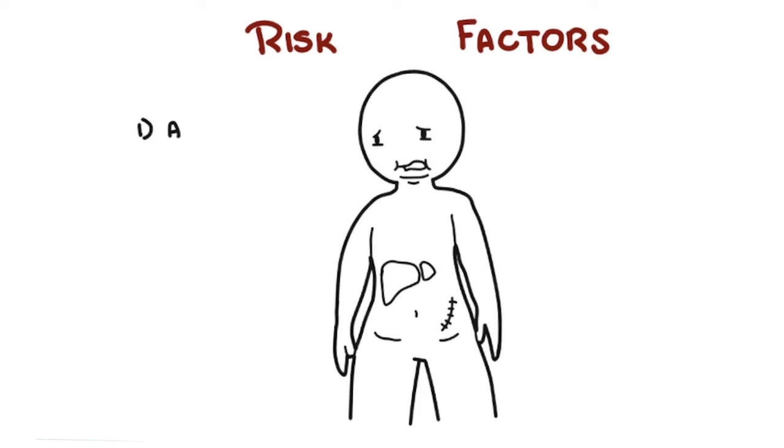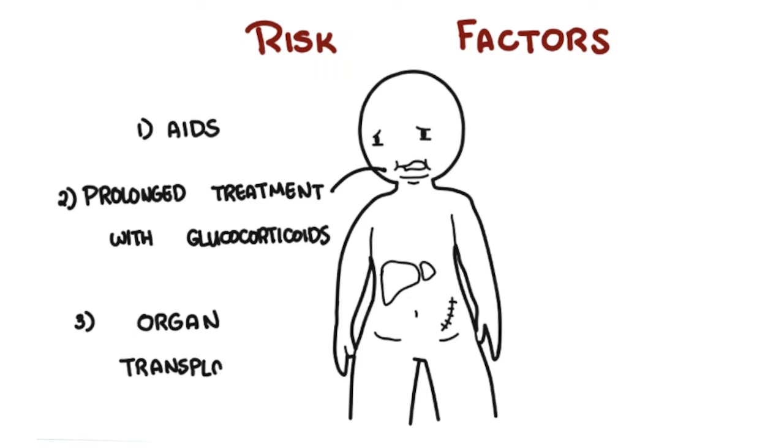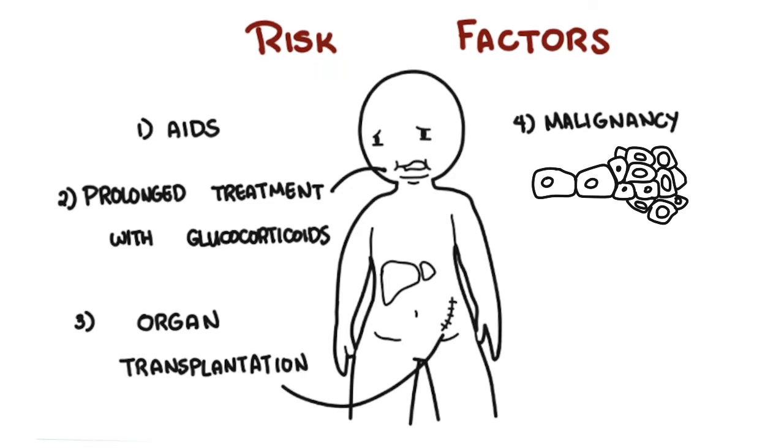The risk factors for cryptococcus infections in descending order include AIDS, prolonged treatment with glucocorticoids, persons who've had an organ transplant, certain malignancies, liver disease, and sarcoidosis.